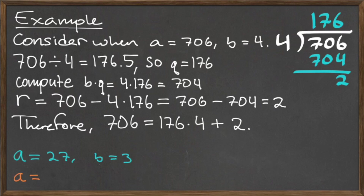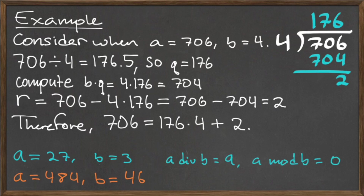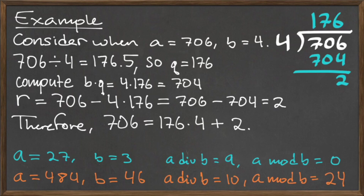For some extra practice, try using long division on the inputs a equals 27 and b equals 3, and again with a equals 484 and b equals 46. For a equals 27 and b equals 3, the quotient a div b is equal to 9, and the remainder a mod b is equal to 0. For the inputs a equals 484 and b equals 46, the quotient a div b is equal to 10, and the remainder a mod b is equal to 24.